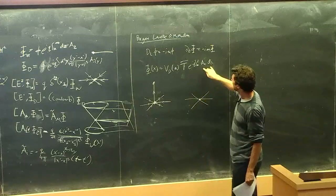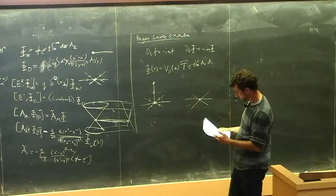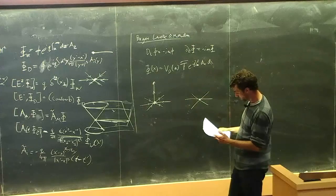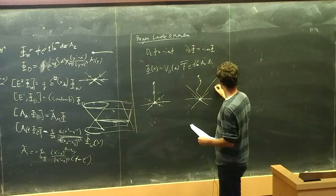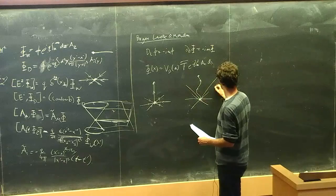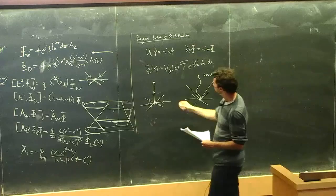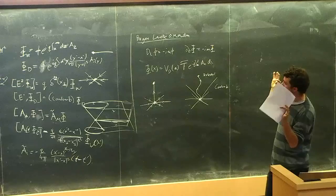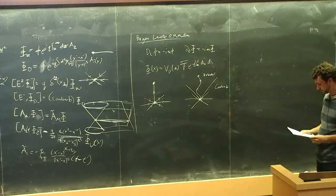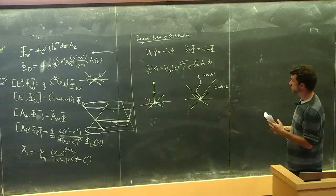To leading order, this also gives the Coulomb field out here, but it does it in a time-independent way. One can generalize this to a moving trajectory. In that case, what you get here is Coulomb, and what you get here is the retarded potential due to this moving charge. They showed that if you take operators like this and use them to construct asymptotic states, you cure the IR divergences.